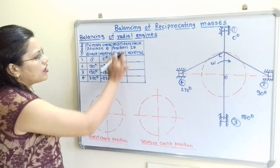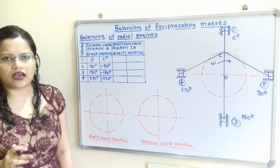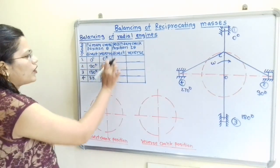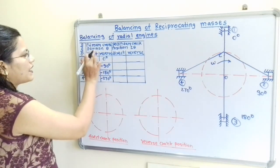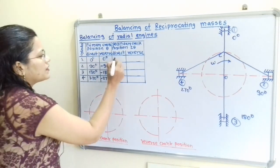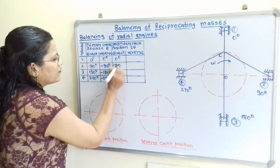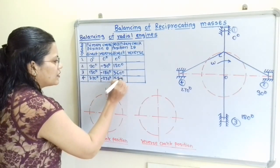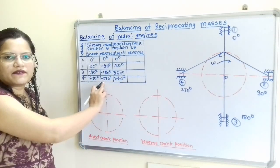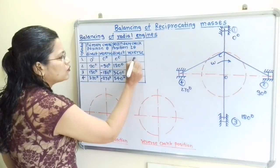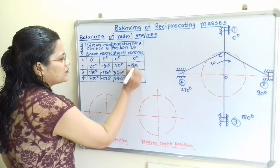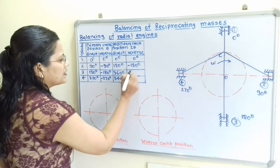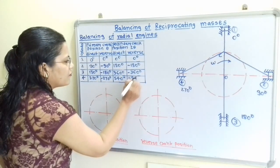For the secondary crank position 2-theta, we multiply the primary crank position by 2. For Direct Crank: 0°, 180°, 360°, and 540°. For Reverse Crank: 0°, −180°, −360°, and −540°. This completes the table.